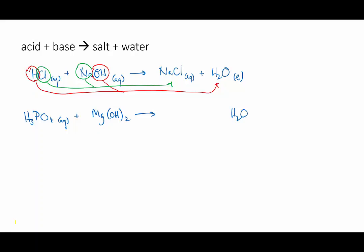Okay, if we assume all the hydrogens and hydroxides are used up, what's left? The anion from the acid is phosphate, and the cation from the base is magnesium. So the salt product is magnesium phosphate. Now we can balance it.